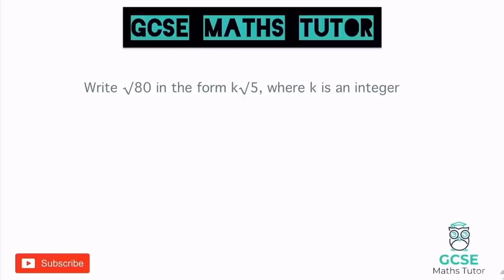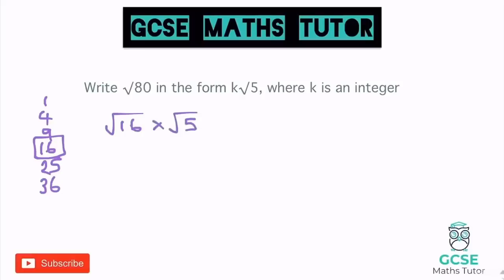Write the square root of 80 in the form k root 5, where k is an integer. For square root of 80, we list square numbers: 1, 4, 9, 16, 25, 36. We need to find the biggest square number that goes into 80. We know 4 goes in, but 16 also goes in — 16 times 5 is 80. So we can write √80 as √16 × √5. The square root of 16 is 4, so it's 4 × √5, which we write as 4 root 5.